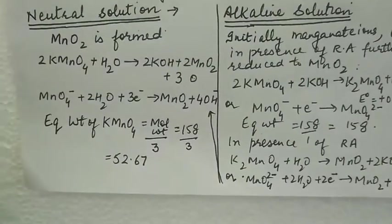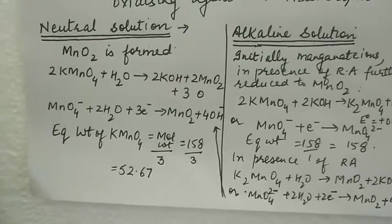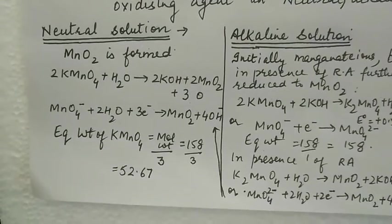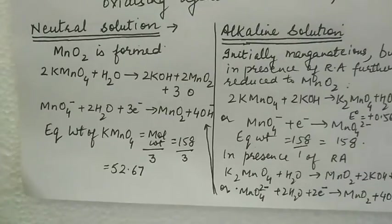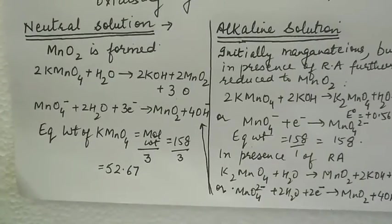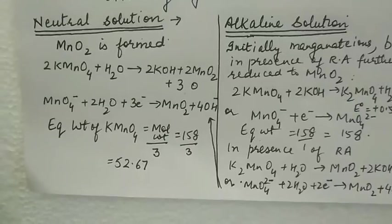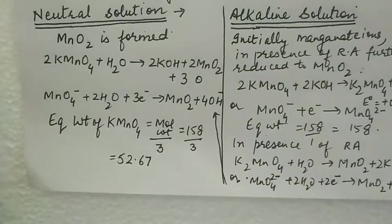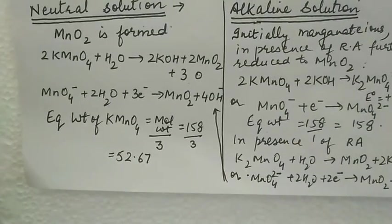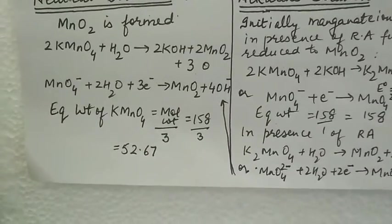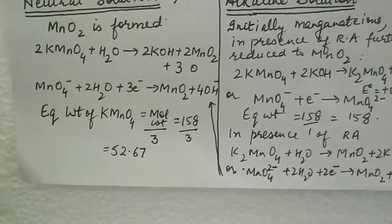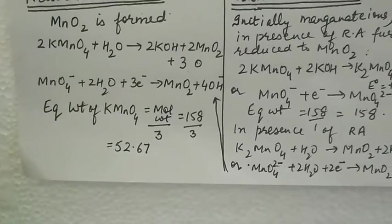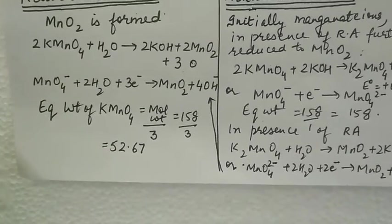In neutral solution, manganese dioxide is formed. The reaction is potassium permanganate reacts with water to form potassium hydroxide, manganese dioxide, and nascent oxygen. Three nascent oxygens are produced. In ionic solution, permanganate ions accept three electrons to form manganese dioxide and hydroxide ions.